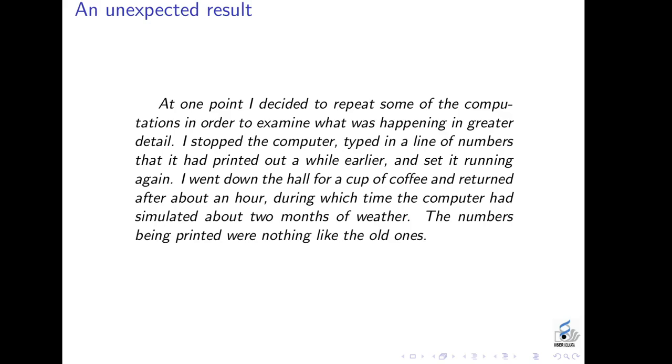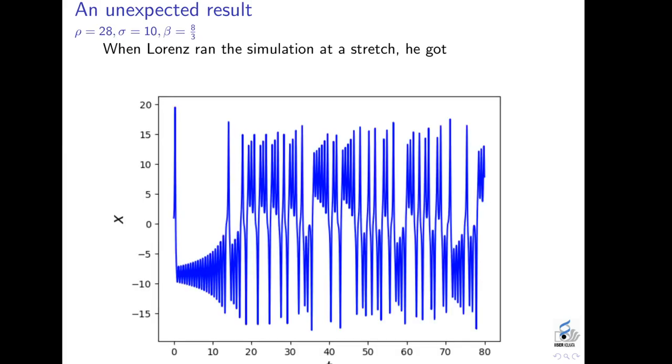Today's computers have become much faster so I don't have to really wait an hour to simulate a month of weather or two months of weather. I can do it much faster on my mobile phone even. I wrote a program to simulate what Lorenz had seen and I am going to show you the results now. For a specific choice of parameter values, rho equals 28, sigma equals 10 and beta equals 8/3. When I ran this simulation, I am pretending that Lorenz ran the same simulation. When he ran there on a stretch, what he got was this blue curve. I have just plotted x here.